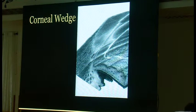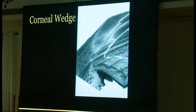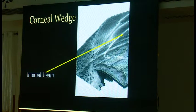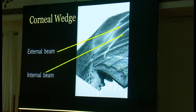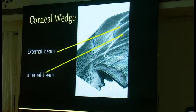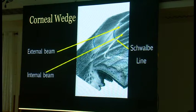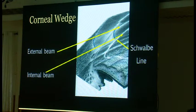The idea with the corneal wedge is that in a dark room, you make a very narrow beam of light that you offset, like you're doing a Van Herrick test. On the gonioscopic view, this gives you two beams of light — it lights up the internal side of the cornea, which is a very crisp sharp line, and the external part of the cornea, which is a little wider and less distinct. They travel in parallel like railroad tracks until they run out of cornea at the corneal-scleral interface, giving you a wedge shape that points to Schwalbe line. Schwalbe line is the anterior border of the trabecular meshwork.